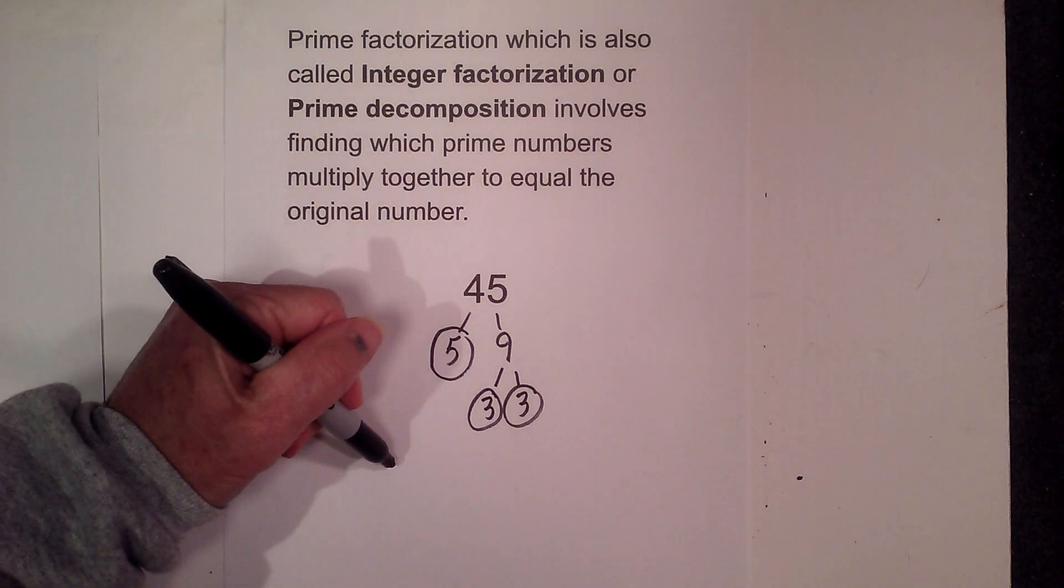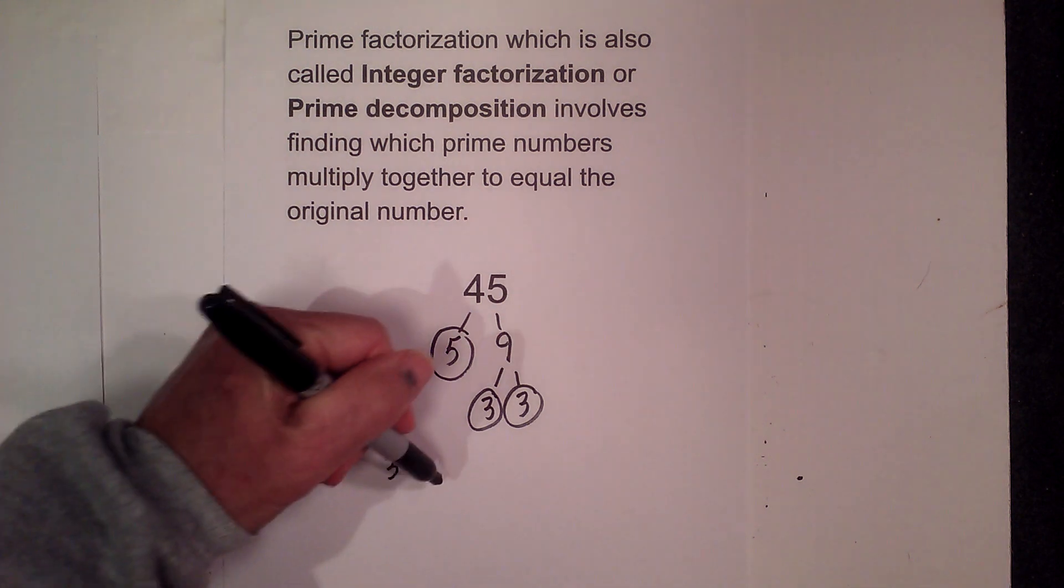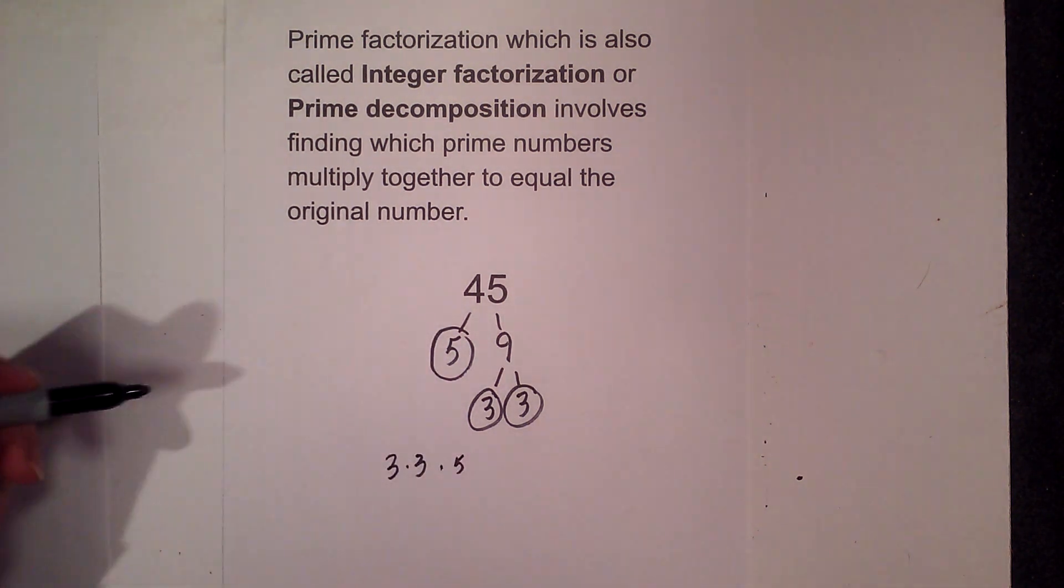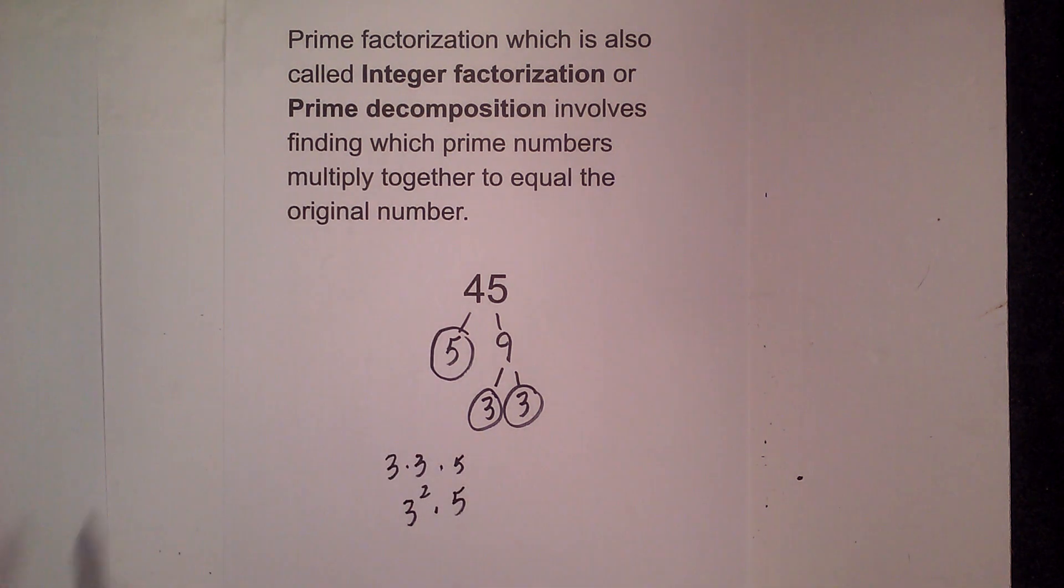So I can write this as 3 times 3 times 5, or I could write it as 3 squared times 5.